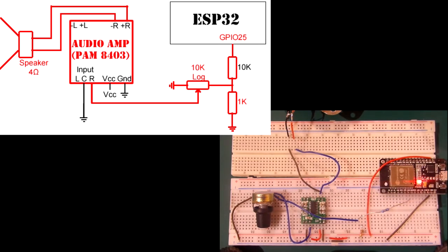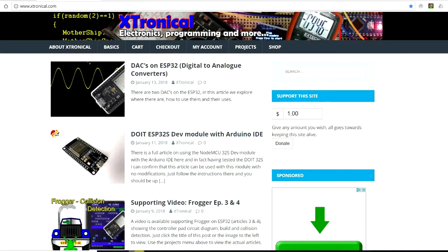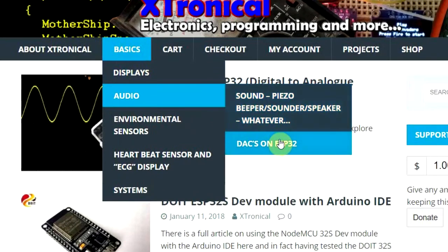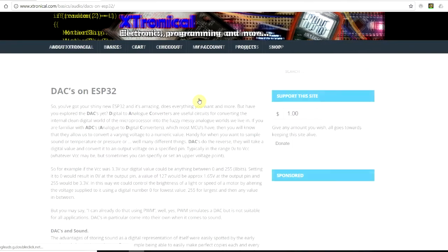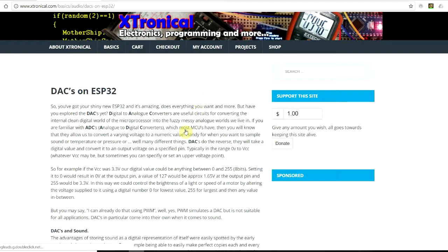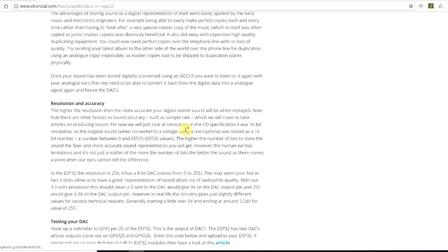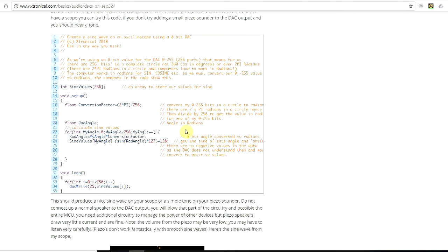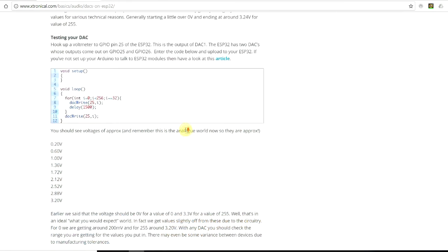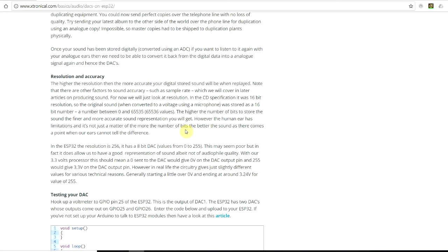So we'll go back now and have a look at some code to create a signal. Go to xtronic.com, and basics, audio, and DAC on ESP32. I will be doing a single episode for the Arduino as well in the very near future. You'll get a write-up of basically what's in this video plus there'll be some sample code down here that you can use for testing if you build this kit. So that's where you need to go to get the code I'm about to show you.